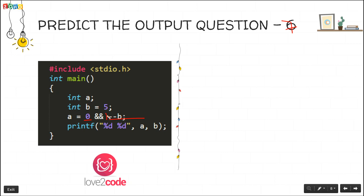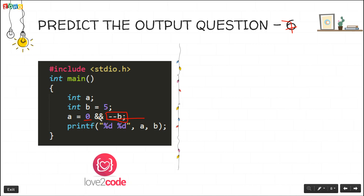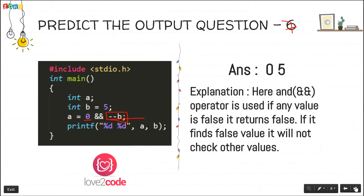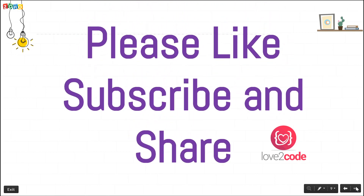The expected output is a equals 0 and b equals 5, because the pre-decrement statement on b was never executed — we found 0 before reaching it. The explanation: with the AND operator, if any value is false it returns false immediately without checking other values. Thank you for watching this video. Please like, subscribe, and share. I will post more videos on Zoho Corporation C programming interviews.